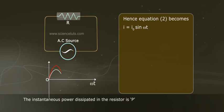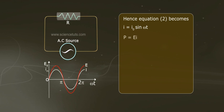The instantaneous power dissipated in the resistor is P. P equals to EI, but E equals to E₀ sin ωt and I equals to I₀ sin ωt. Therefore, P equals to E₀I₀ sin² ωt.